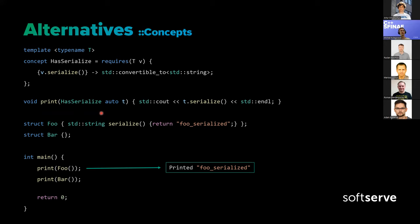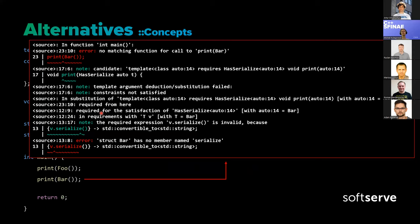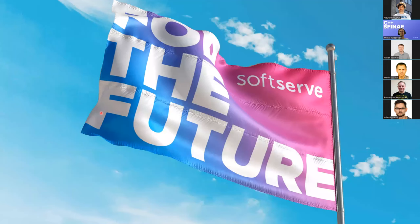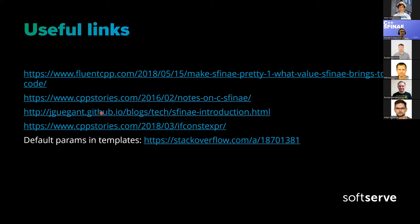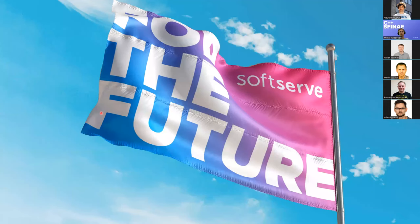The only downside with concepts right now may be that it's C++20. But if you're on that standard, it's really worth checking out. If not, you still have SFINAE and all those additional tweaks like std::enable_if, void_t, true_type, false_type — you don't need to do all the old SFINAE with typedefs and sizeof tricks. I have some useful links that I'll put on the conference page. Do any of you have any questions?